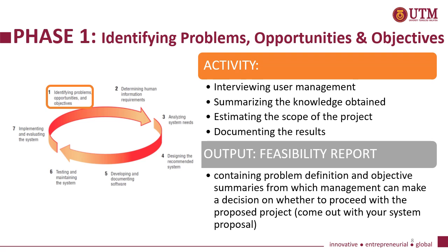Phase one: identifying problems, opportunities and objectives. There are four main activities. One, interviewing user management. Two, summarizing the knowledge obtained. Three, estimating the scope of the project. Four, documenting the results. The output of phase one will be the feasibility report. It contains problem definition and objective summaries from which management can make a decision on whether to proceed with the proposed project and come up with a system proposal.